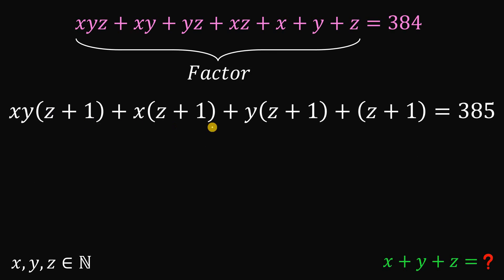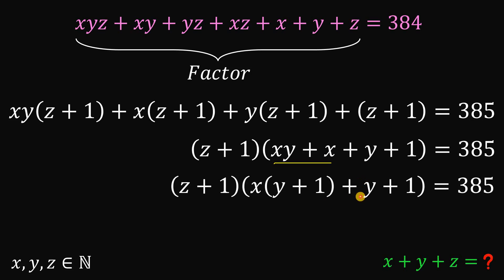Now since those terms have a factor of z plus 1, so we can factor out z plus 1. And from here, notice we can factor out x in these two expressions to get a factor of y plus 1. Now we also have a factor of y plus 1 here, so we can factor out y plus 1. So this will result to z plus 1 times x plus 1 multiplied by y plus 1.